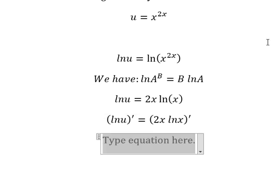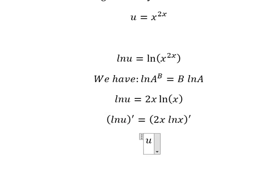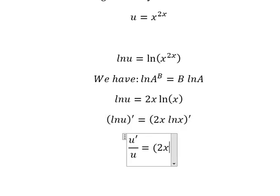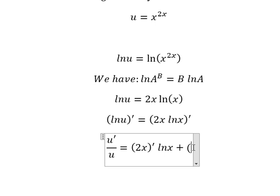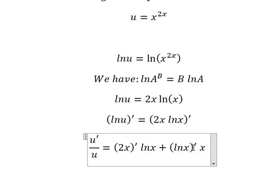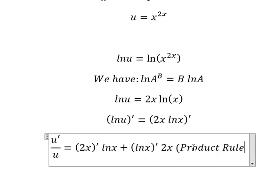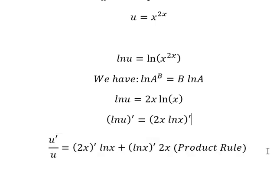Next we need to take the first derivative for both sides, and we have like this. First derivative of F(u), we have first derivative of u over u. Then we need to do the first derivative of ln(x) multiplied by X — this is about the product rule.